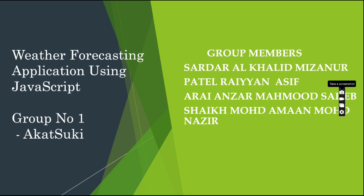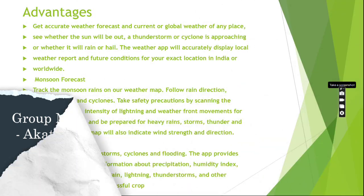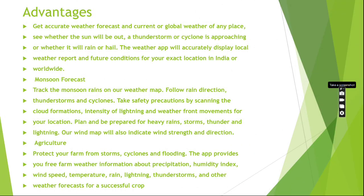Now let's look at the advantages of this mini project. We can predict weather using an API to get accurate weather forecasts — whether the sun will be out, whether there will be a heat wave, rain, or any type of storm. You can plan your day according to the weather forecast by just entering your location in this web page.